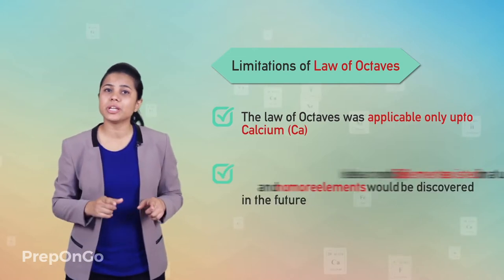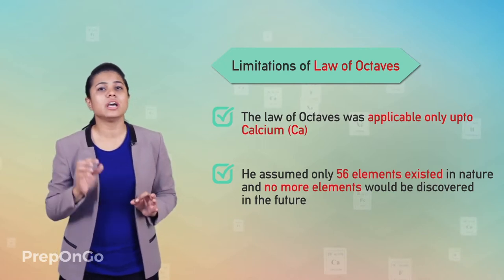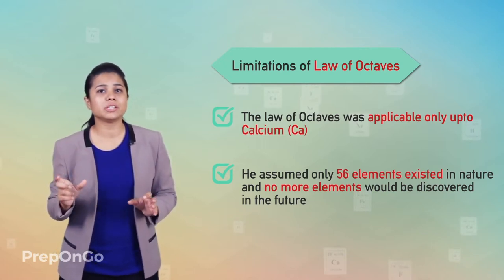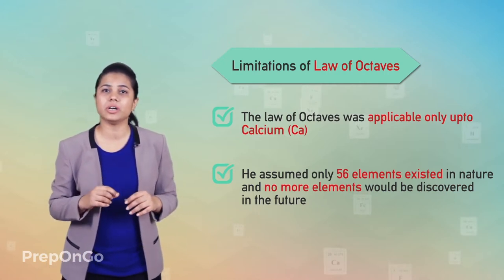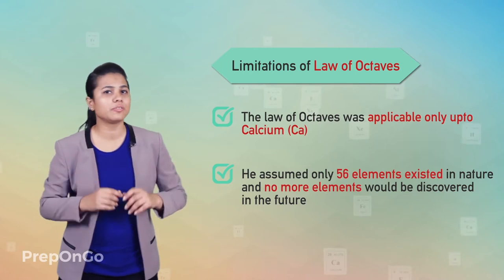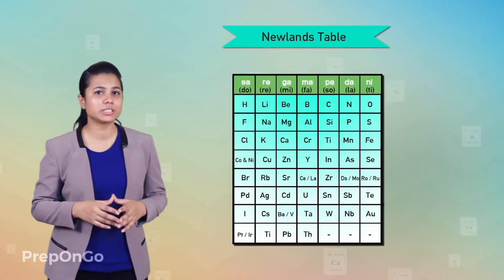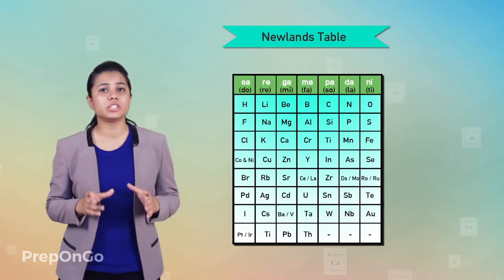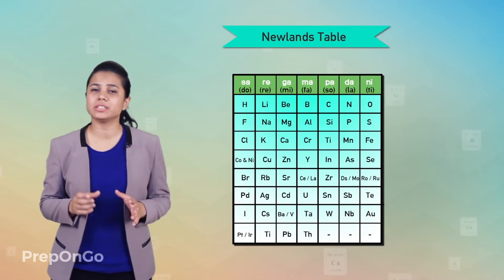It was assumed by Newland that only 56 elements existed in nature and no further elements would be discovered in the future. But later on, several elements were discovered whose properties did not fit in Newland's table. In order to place elements into his table, Newland adjusted two elements in the same slot but also put some unlike elements under the same note.